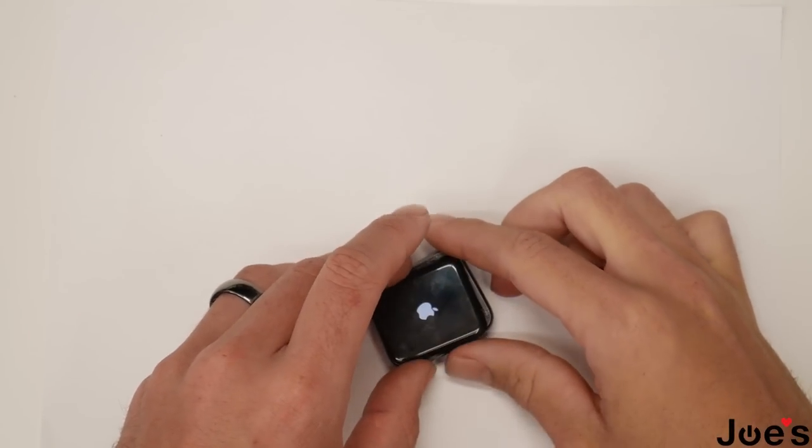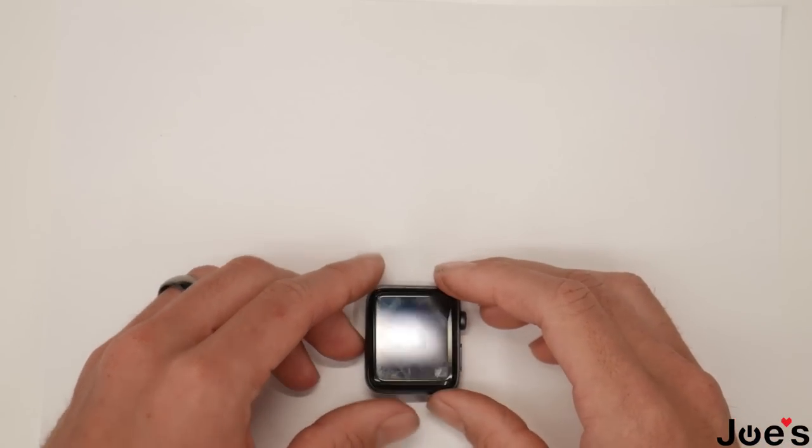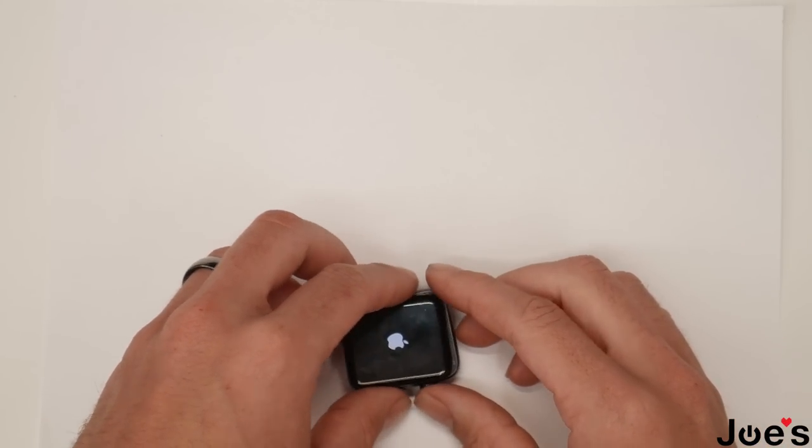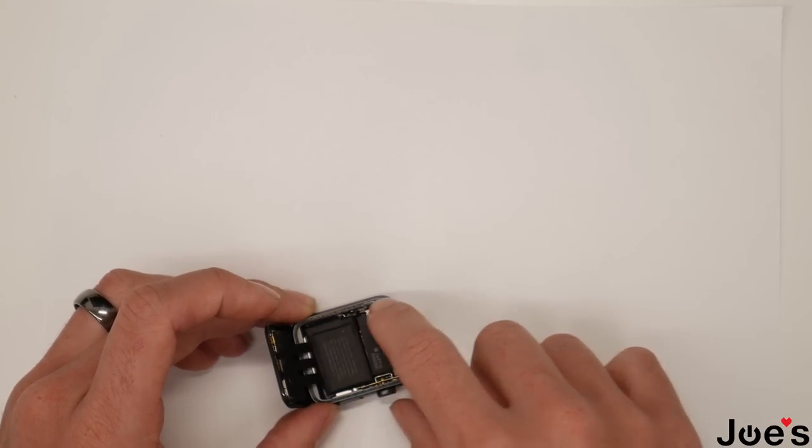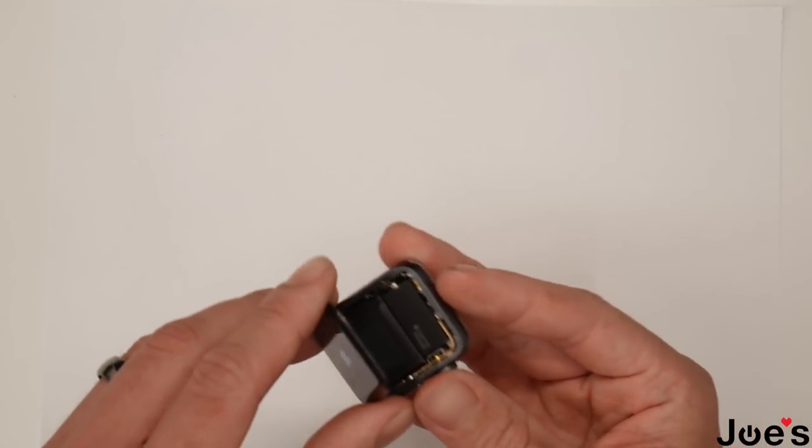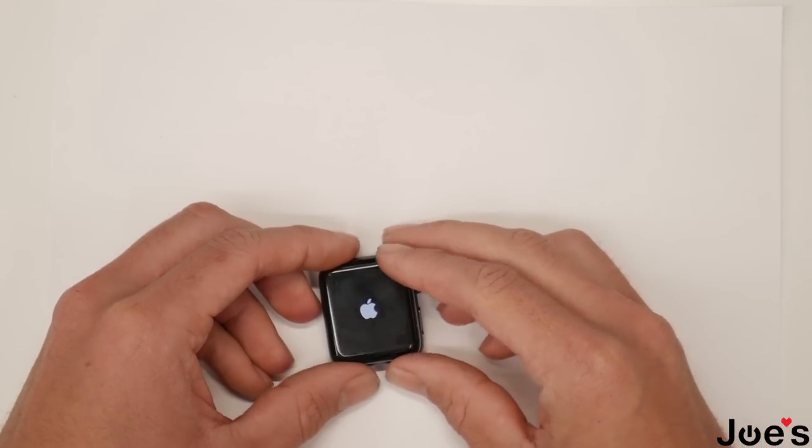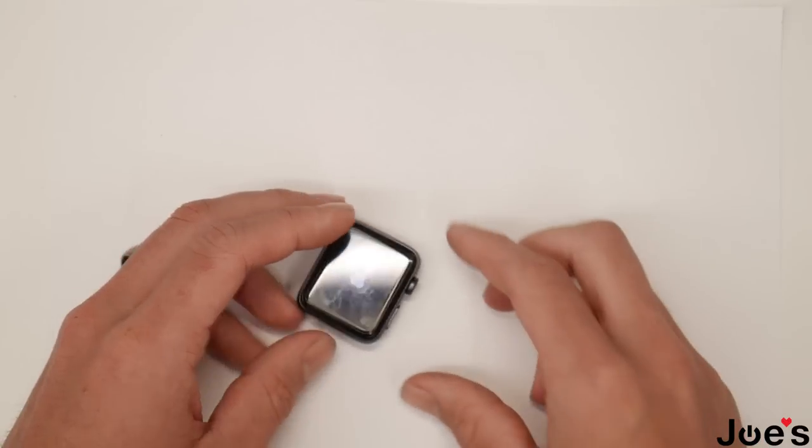All right, so now that we got the watch powered on and verified that it's working, the next step what we do is just take some adhesive, run it around the edge here, and close up the watch again. But as for now, the watch is good, screen is working, and yeah, that's how you replace your screen on a Series 3 Apple Watch.